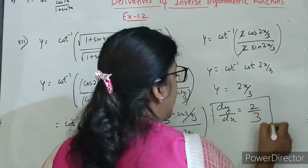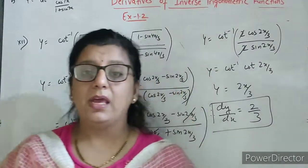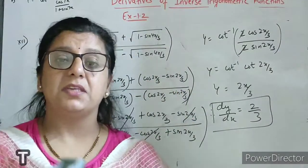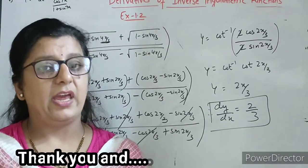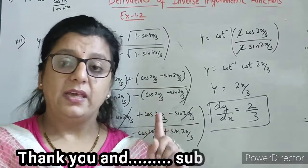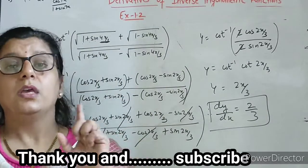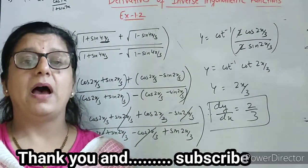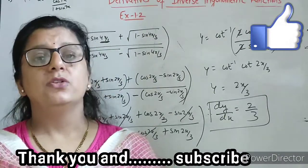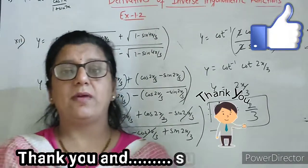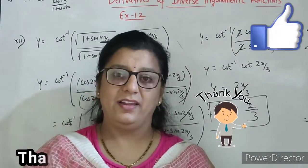So y equals to cot inverse of cos 2x by 3 upon sin 2x by 3, that is cot inverse cot 2x by 3. Using property cot inverse cot x equals x, this is 2x by 3. Now differentiate: dy by dx is 2 by 3. Abhi hum ne kya dekha — yeh inverse trigonometric function mein main thing is that we have to simplify the function using trigonometric formula and properties. Isi liye jo main last lecture mein bola tha, vapis se bolti hoon: you have to first by heart all the properties and formulas. Thanks for watching my video till end, keep watching and keep learning.